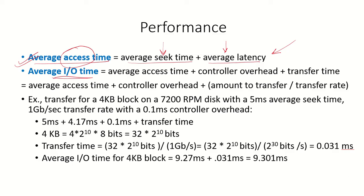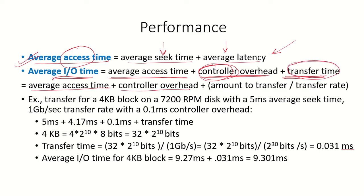The average I/O time is the average access time plus the controller overhead plus the transfer time. Each hard disk has an electronic controller which controls the transfer of data between the microprocessor or RAM and the hard disk. The system bus also has some bandwidth and requires some time to transfer data between the two devices. Transfer time is calculated as the amount of data to be transferred divided by the rate of transfer — that is, how many bits per second the bus can transfer.